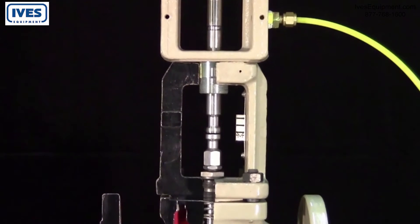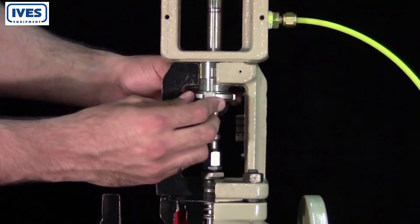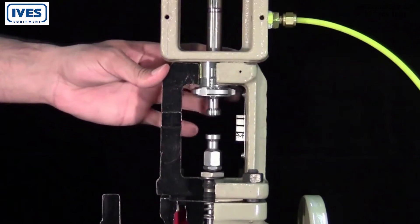For this 3-15 psi actuator, we'll apply approximately 20 psi to retract the stem. This allows us to install the ringnut without causing any damage to the plug and seat sealing surfaces.